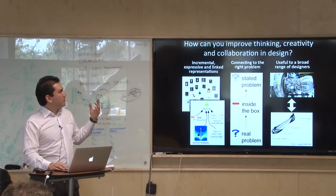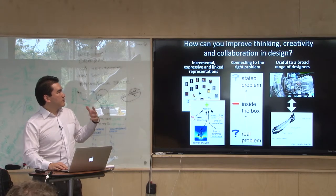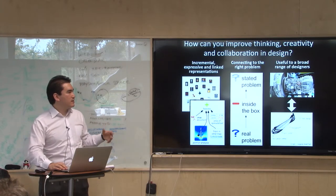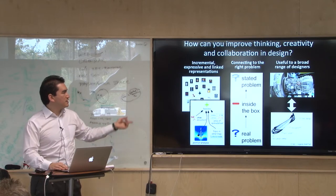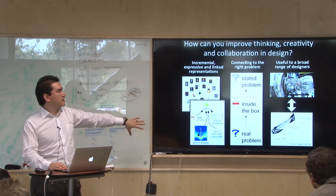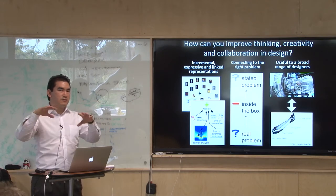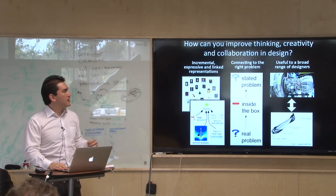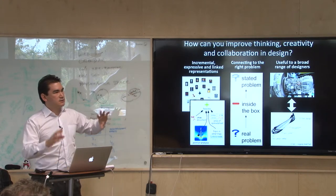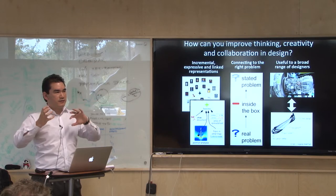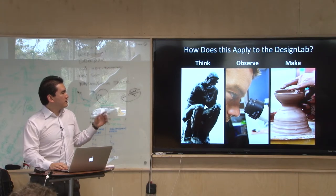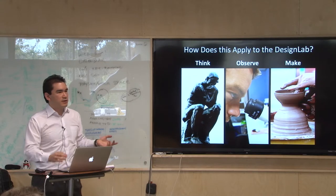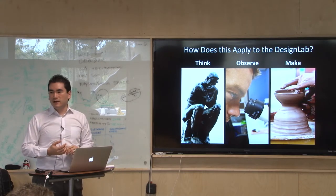Going back to the original question: how does this potentially help improve thinking about thinking — thinking about creativity and thinking during collaboration — through having an incremental and expressive representation linked to content, connecting to the right problem, and exploring the space carefully to decide what the cost of expanding the creative space is. It's demonstrated to be useful to a broad range of designers, suggesting it could help form a sort of neutral language where different kinds of integration could happen. I've got a couple of quick scenarios on how it might apply to the design lab, but I'm also conscious of time and can open to discussion now.